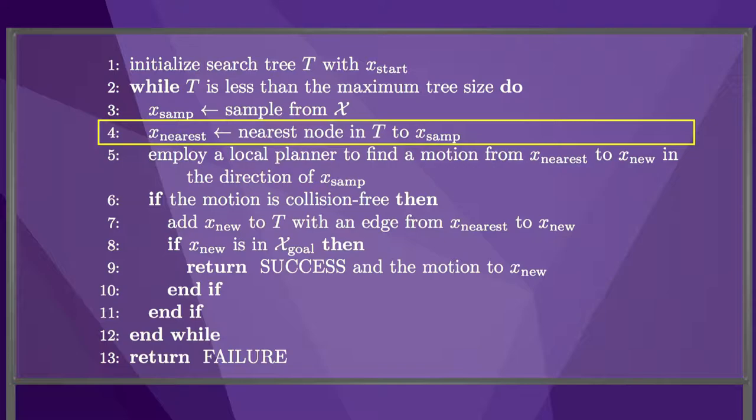The sampler should also occasionally sample states in the goal region to try to complete the planning process. Returning to the algorithm, line 4 chooses the node in the tree that is closest to the new sample. Various data structures and algorithms can be employed to make this operation efficient, but we first have to have a sensible definition of the distance between two states.